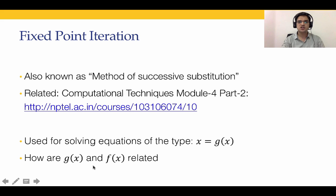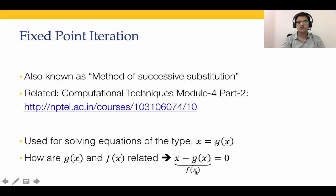The question is: how are g(x) and f(x) related? If we rewrite x = g(x) as x - g(x) = 0 or g(x) - x = 0, we have recast it as f(x) = 0. We should note that g(x) is not a unique representation — there are multiple ways in which we can convert f(x) into g(x).